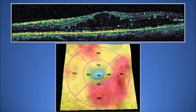Here is an example of OCT for a patient with diabetic macular edema. The upper image shows a cross-sectional OCT of thickened macula with intraretinal cysts and intact vitreo-macular interface. The second image is an OCT map, which shows the location of the edematous tissue and its thickness.